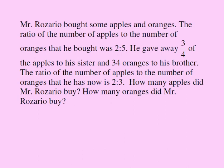Mr. Rosario bought some apples and oranges. The ratio of the number of apples to the number of oranges that he bought was 2 to 5. He gave away 3 fourths of the apples to his sister and 34 oranges to his brother. The ratio of the number of apples to the number of oranges that he has now is 2 to 3. How many apples did Mr. Rosario buy? How many oranges did Mr. Rosario buy?